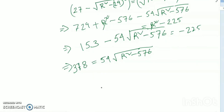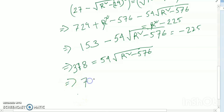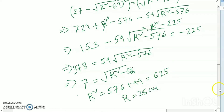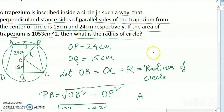From √(r² − 576) = 7, squaring gives r² − 576 = 49, so r² = 576 + 49 = 625. Therefore r = 25 centimeters.